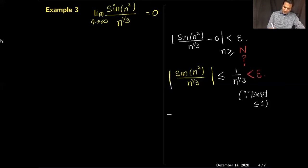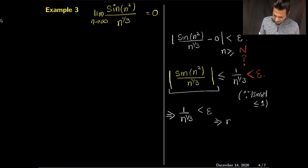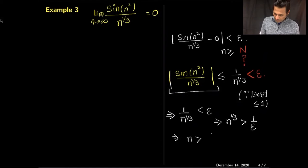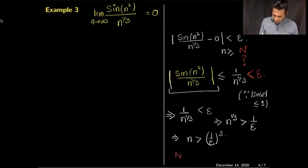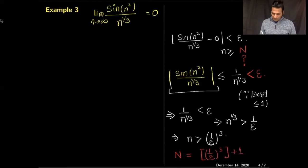To make 1/n^(1/3) < ε, I need n^(1/3) > 1/ε, which means n > (1/ε)³ = 1/ε³. So I can choose capital N as the ceiling of 1/ε³ plus one so that each inequality holds strictly.